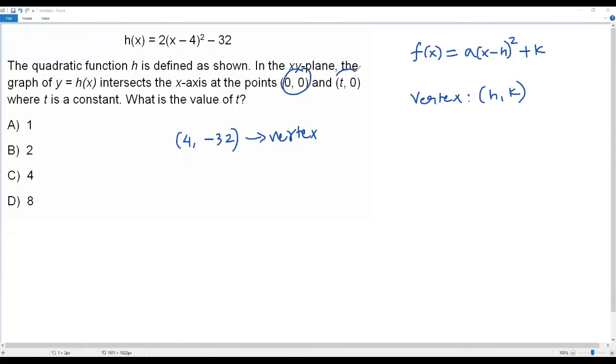Here we have two x-intercepts (0, 0) and (t, 0). I find the average of the x-coordinates at the x-intercepts, that is (0 + t)/2. When I find the average of two values, I add them and divide by 2. The average of the x-coordinates at the two x-intercepts must equal the x-coordinate of the vertex, which is 4.